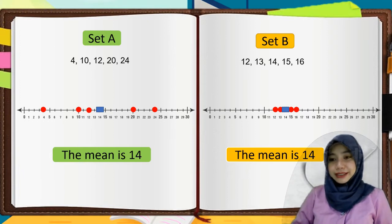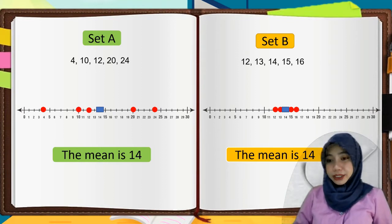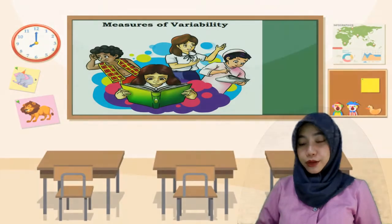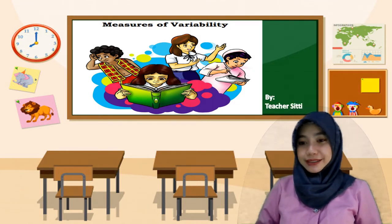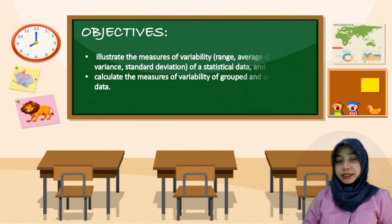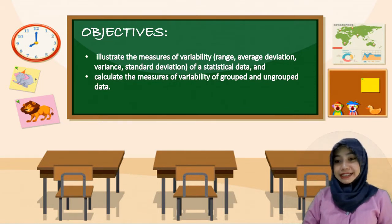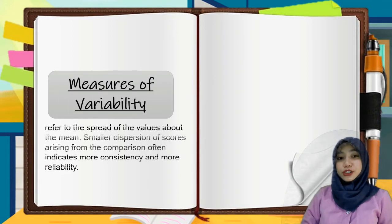Observe how they look like. In set A, the data are widely spread, while in set B, they are closer to each other. The spreadness and closeness of a given group of data can be measured using the measures of variability, which is our topic for today. Our objectives for today: illustrate the measures of variability — the range, average deviation, variance, and standard deviation of a statistical data.